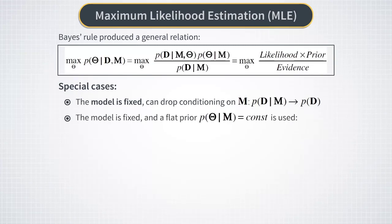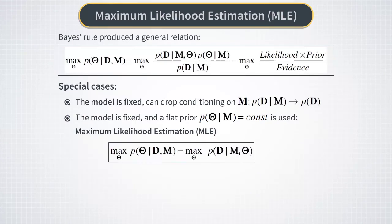If in addition to fixing the model we additionally take a flat prior, which is a prior that is a constant function of data, then maximization of posterior probability is equivalent to maximization of probability to see the observed data given the model and a current value of parameter theta. This method is known as the maximum likelihood estimation or MLE for short.